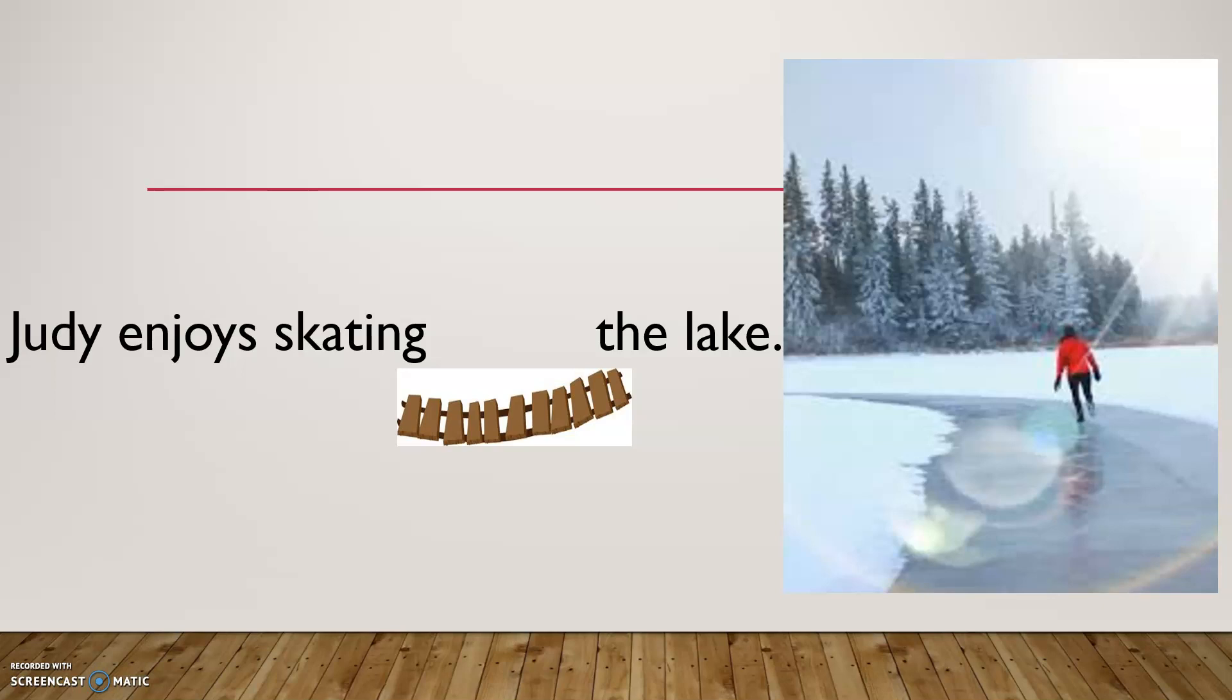For example, Judy enjoys skating the lake. Something is missing and we need to connect using a bridge or a preposition. Pause my video and solve the sentence. Did you know the answer? Okay, let's check together. Judy enjoys skating around the lake. Look how she is moving around the lake. So, around is a preposition that shows place.